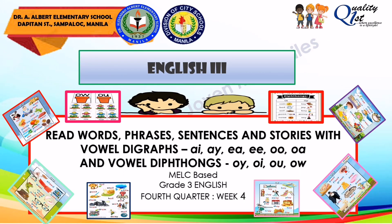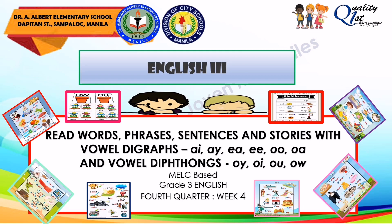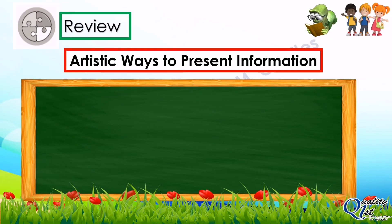Hi kids, how are you today? That's great! Today we are going to read words, phrases, sentences, and stories with vowel digraphs such as AI, AY, EA, EE, OO, and OA, and vowel diphthongs such as OI, OY, OW, and OU. This is based on the Most Essential Learning Competencies of Grade English under Week 4 of the Fourth Quarter. Are you ready? Let's do this!